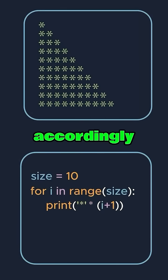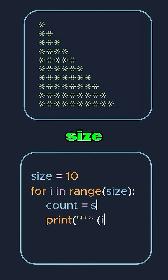If you're wondering whether there's a way to start with 10 stars and decrease their number instead, there is. Just subtract i from size in each iteration.